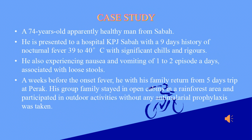Case Study: A 74-year-old apparently healthy man from Sabah presented to KPJ Sabah Hospital with a 9-day history of nocturnal fever of 39 to 40 degrees Celsius with significant chills and rigors. He also experienced nausea and vomiting of 1 to 2 episodes a day, associated with loose stools. A week before the onset of fever, he and his family returned from a 5-day trip at Perak. His family group stayed in open cabins in a rainforest area and participated in outdoor activities without any anti-malarial prophylaxis.